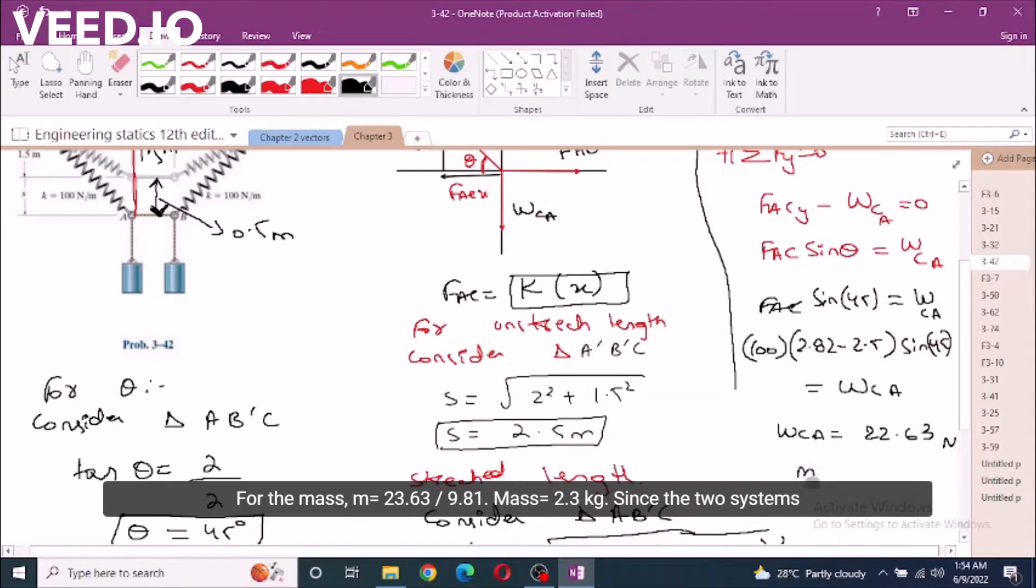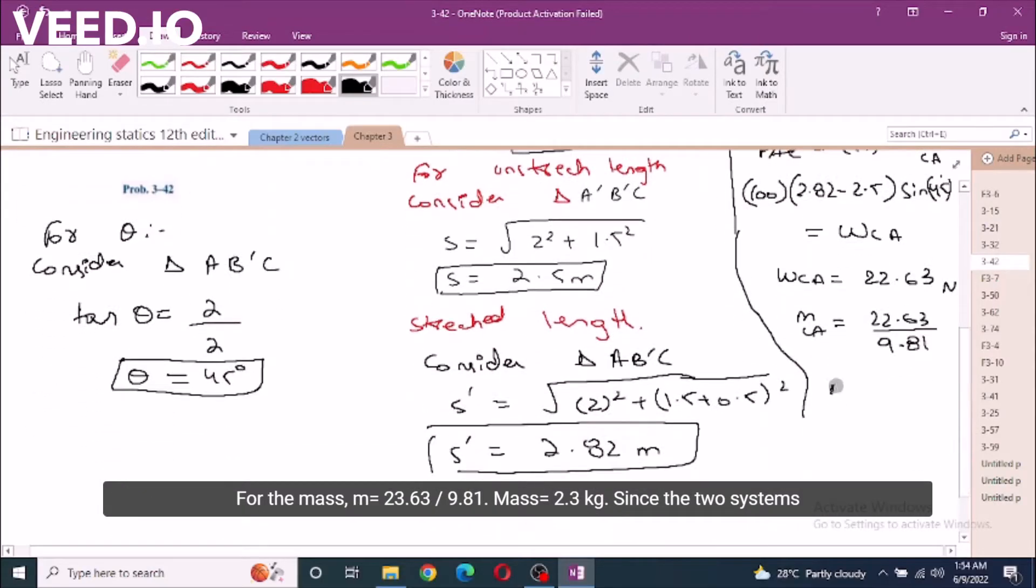For the mass, I have 22.63 newtons divided by 9.81. Mass is 2.3 kg.